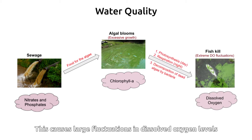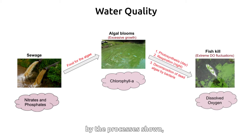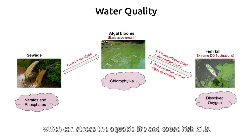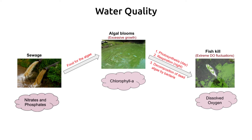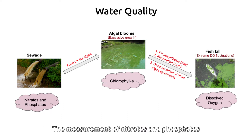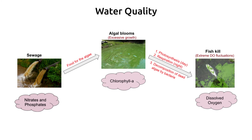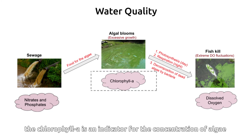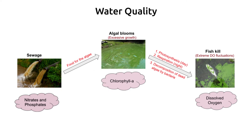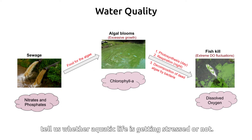This excessive algae growth causes large fluctuations in dissolved oxygen levels, which can stress the aquatic life and cause fish kills. The measurement of nitrates and phosphates gives us an indicator of the state of nutrients in the lake. Chlorophyll A is an indicator for the concentration of algae, and dissolved oxygen variations tell us whether aquatic life is getting stressed or not.